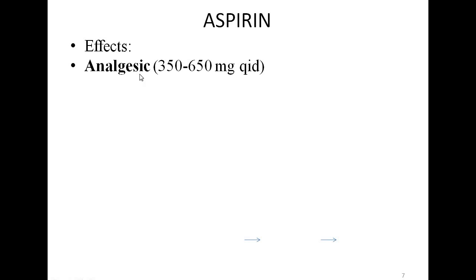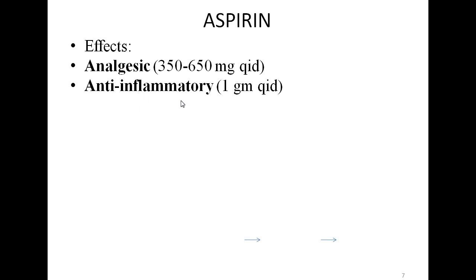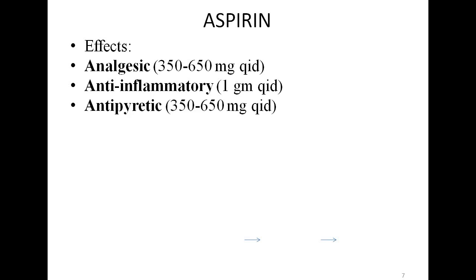The mechanism of action of aspirin: it inhibits COX-1 and COX-2, therefore prostaglandin synthesis is inhibited. Aspirin also inhibits thromboxane synthase in platelets, therefore platelet aggregation is inhibited. The effects: aspirin has an analgesic effect at 350 to 650 mg orally 4 times a day. It has anti-inflammatory action, but the dose for this is high — up to 4 grams in divided doses (1 gram 4 times a day). The antipyretic dose is similar to the analgesic dose: 350 to 650 mg orally 4 times a day.